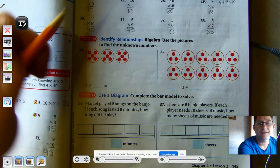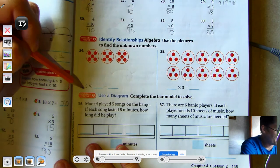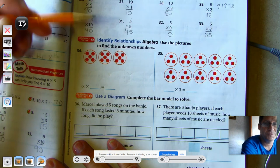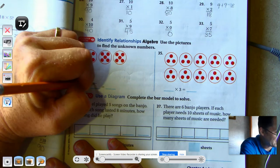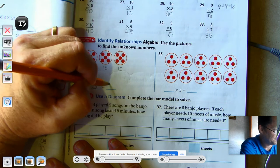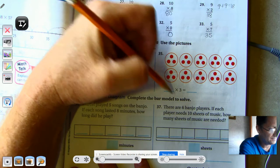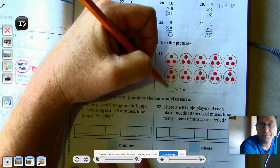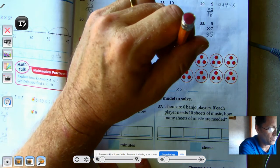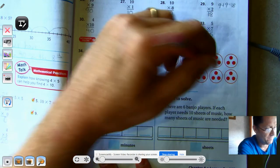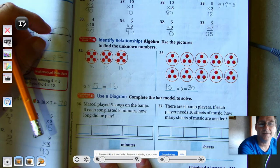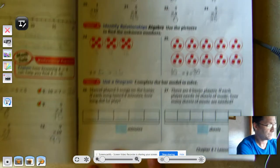Use the pictures to find the unknown numbers. So I see a 3 as a factor and that's because we have 3 circles or 3 groups. Now in each group I see that I have 5, so 5, 10, 15. In this one I need to find out how many groups I have. I see that there's 3 in each group. So how many groups are there? 1, 2, 3, 4, 5. Five times 3 is 15, and we know that 10 times 3 is 30.